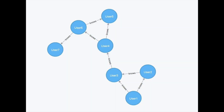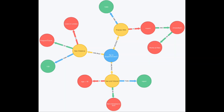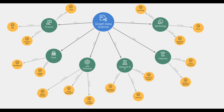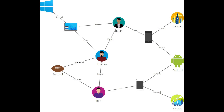What makes a graph database different is that it is designed to treat the relationships between data as equally important. Nodes connected to nodes, connected to nodes, connected without constraints. You'll see how we are using the information differently than the silos of relational databases.